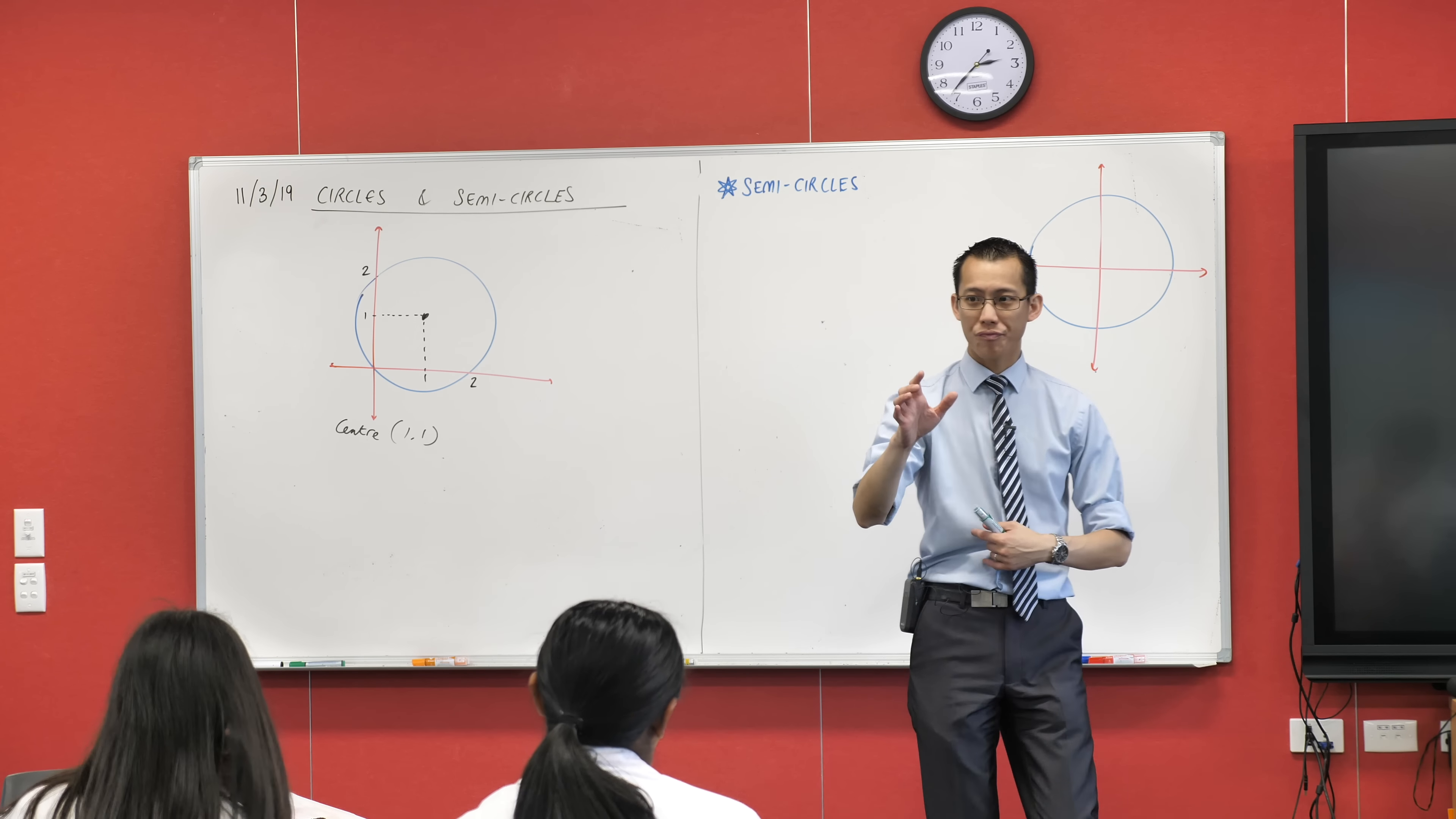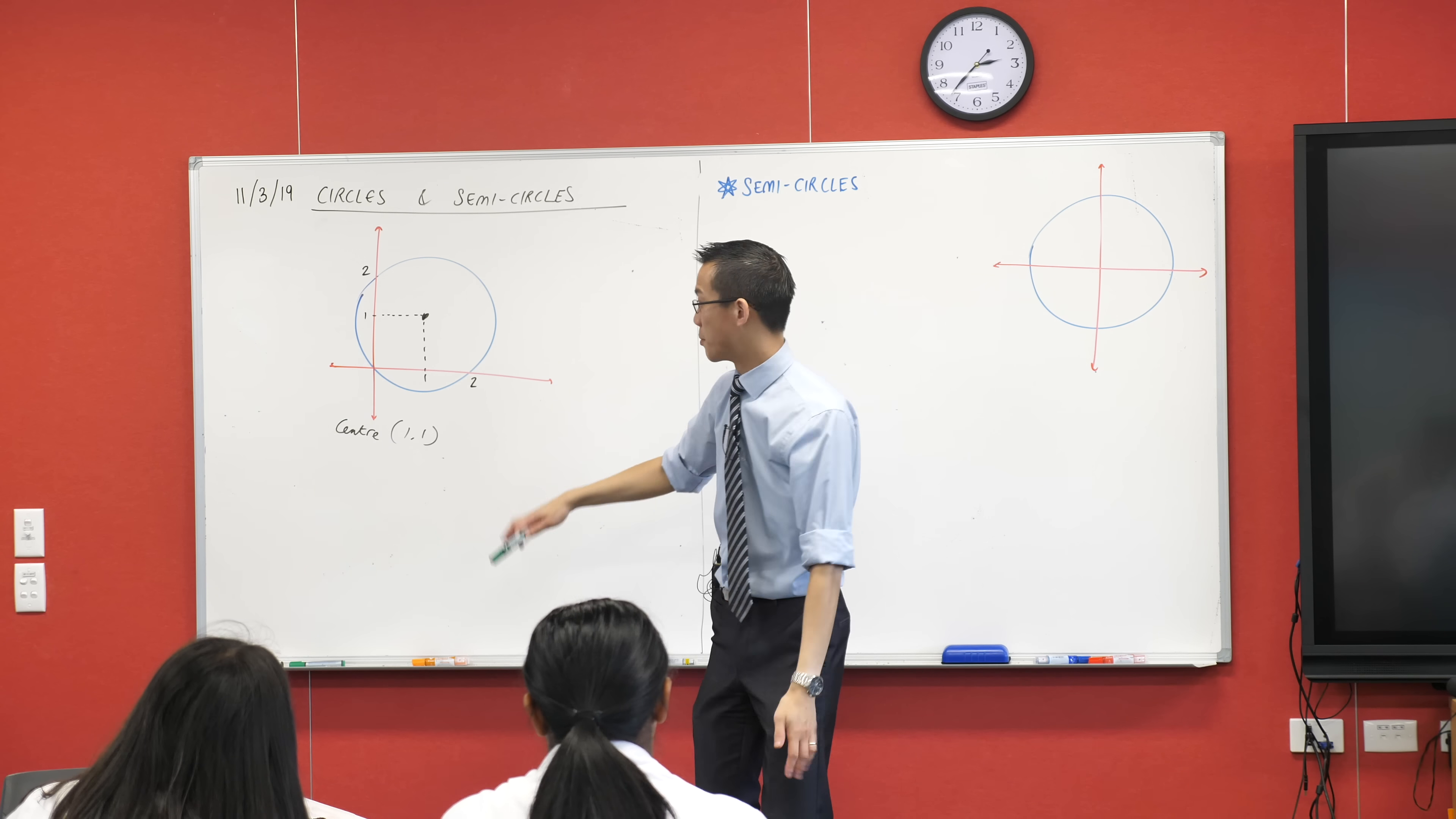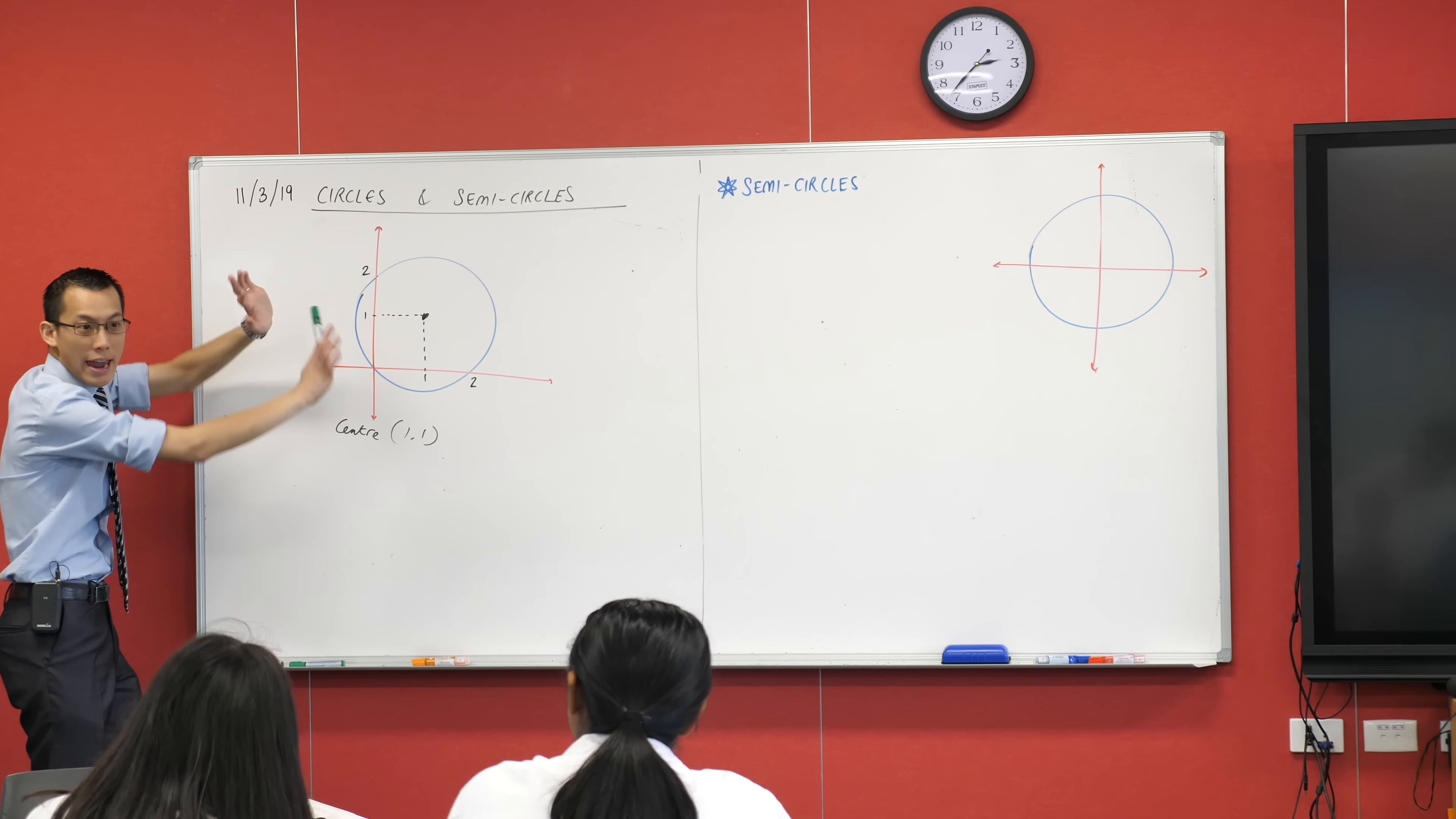The center has coordinates (1,1). So happy times with that. But then you look and there's not any nice neat point. I want you to remember what is the radius? The radius is the distance from the center to anywhere on the circumference, right?